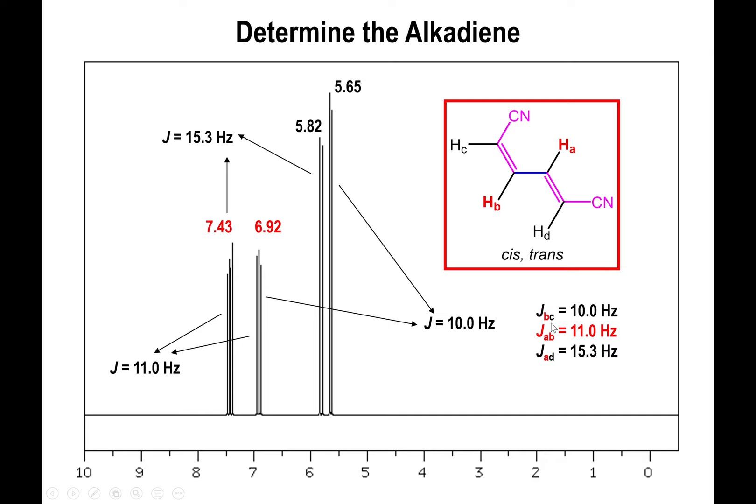The B-C coupling constant is 10 Hz, consistent with the cis configuration. The A-D coupling constant is 15.3 Hz, consistent with the trans configuration. The coupling between HA and HB, which are trans to each other, is 11 Hz — a little on the short side compared to the typical range, but it still follows. Compared to the multiplicity seen in the peaks, that is also validation that you're looking at HA and HB. This example shows how you can use coupling constants to figure out the specific proton in your molecule that corresponds to each peak in the spectrum.